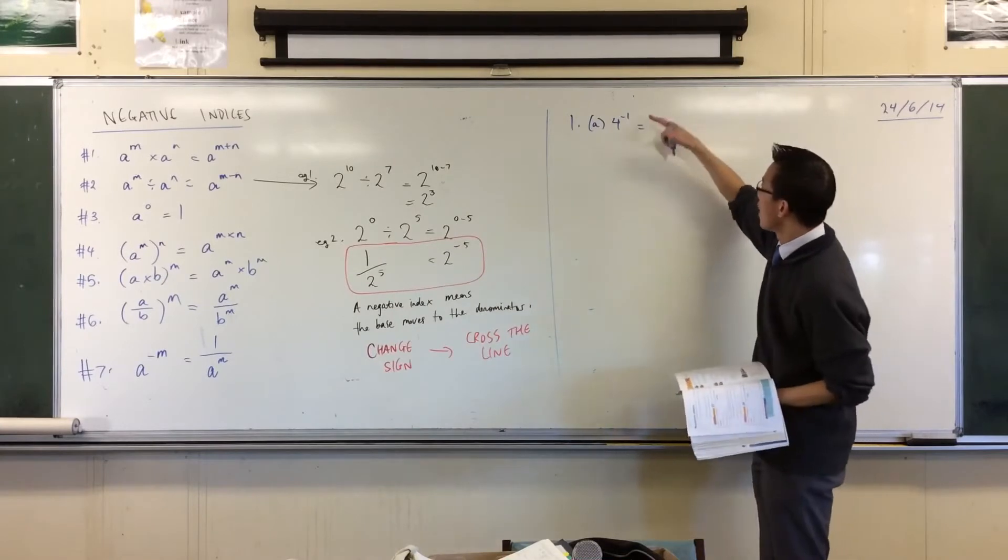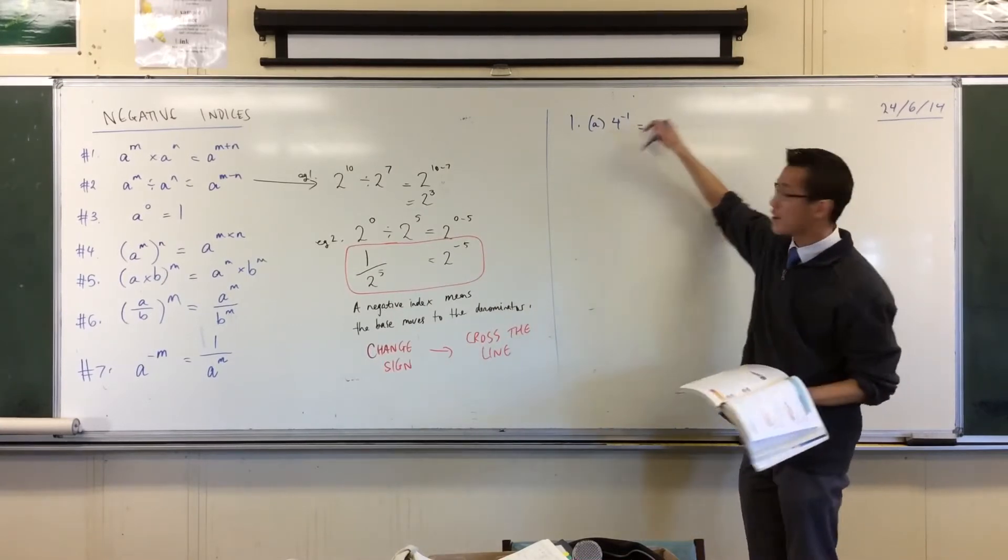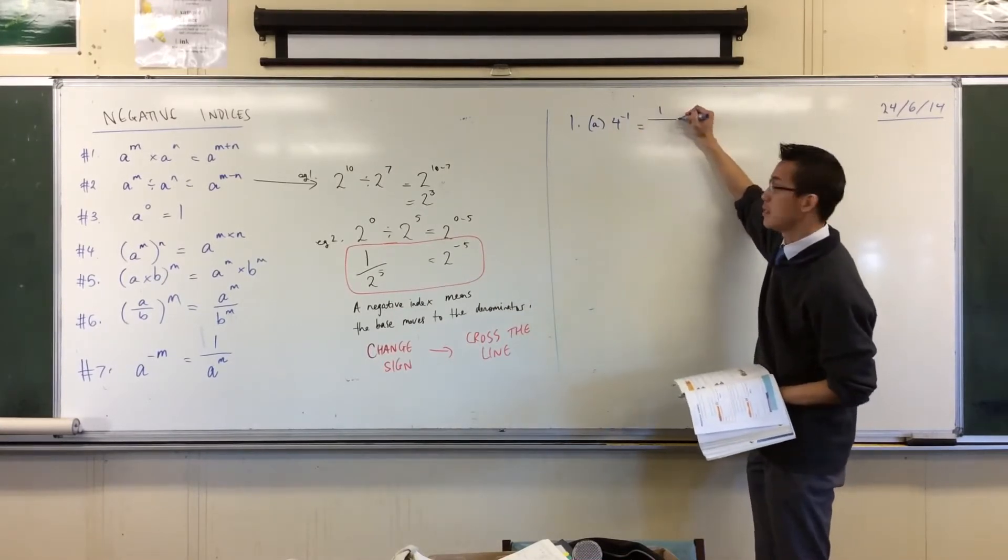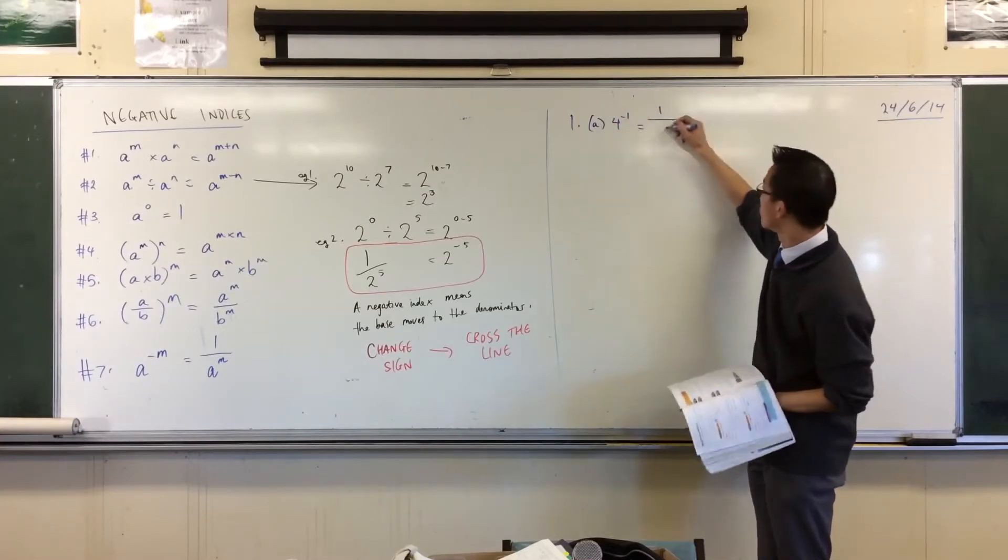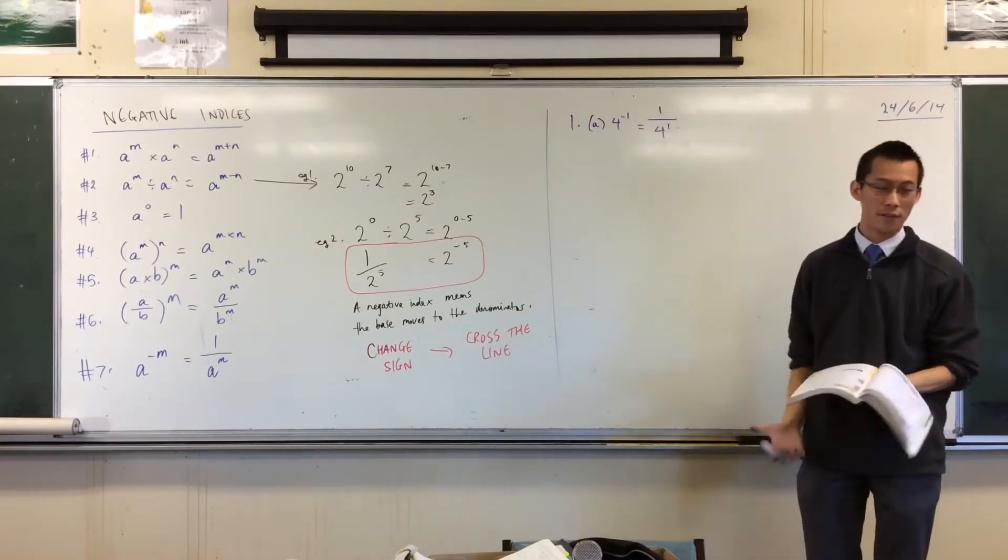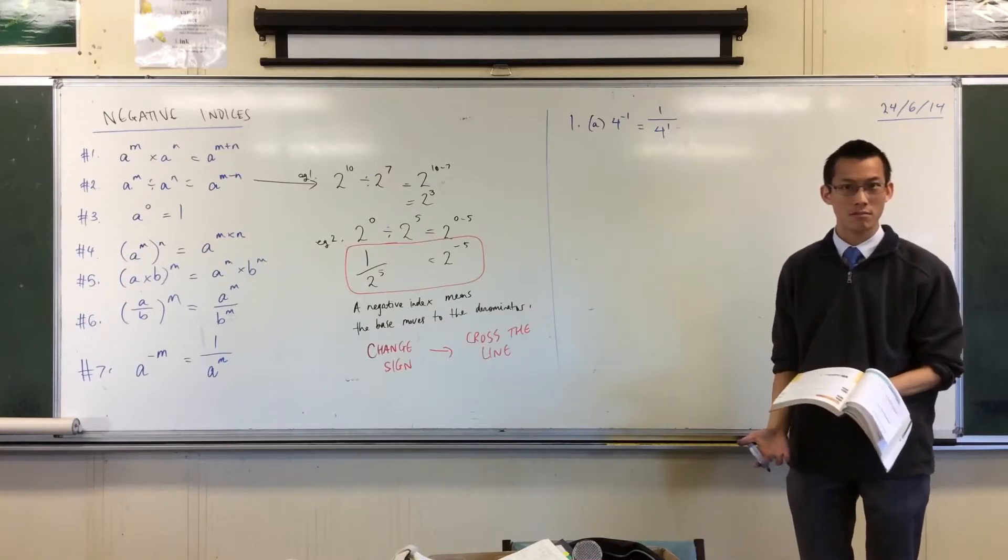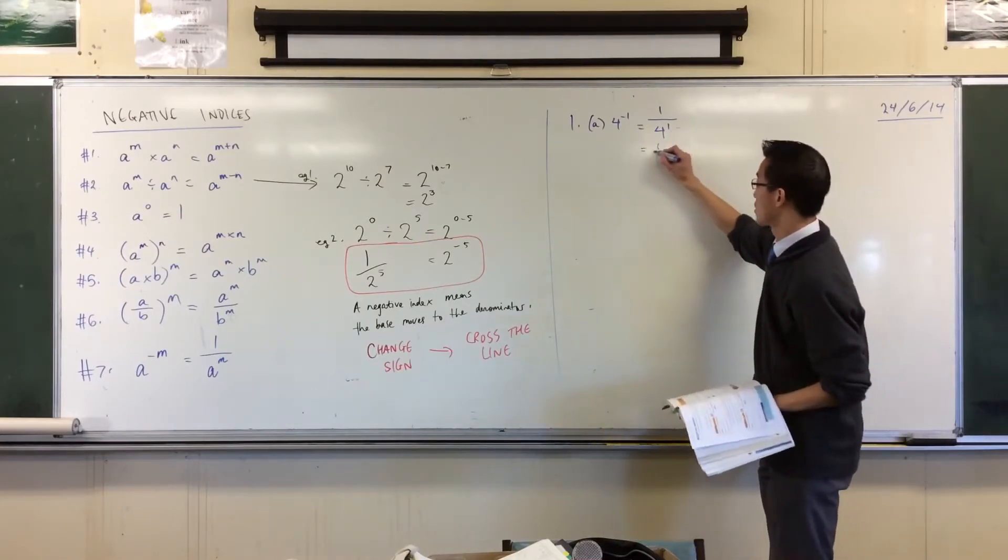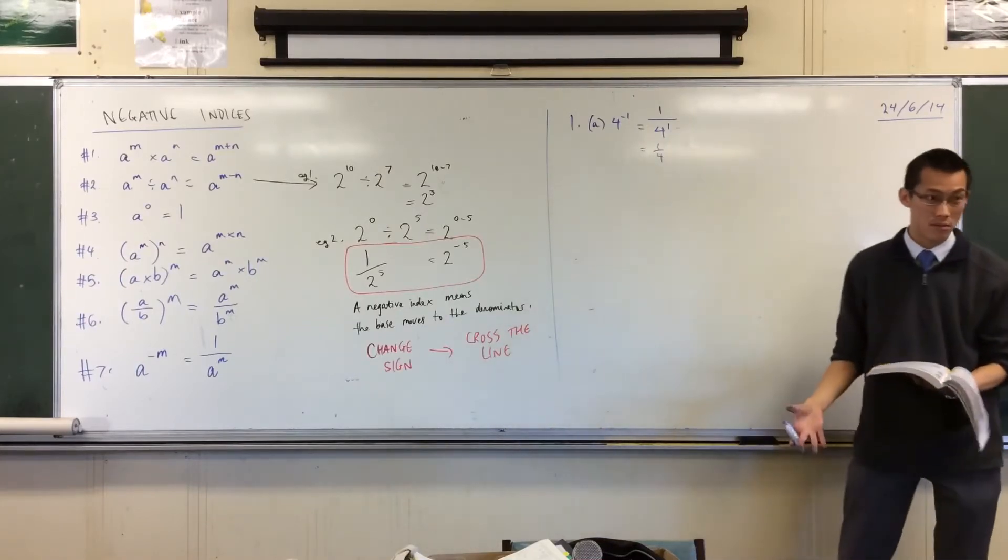So what's going to happen here? I see the negative index. I'm going to say 1 over, and then I'm going to change the sign. So now it's positive 1. But of course, 4 to the power of 1 is just 4, so it's just a quarter. There you go, that's all there is to it.